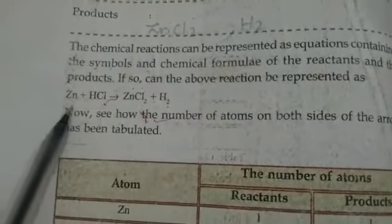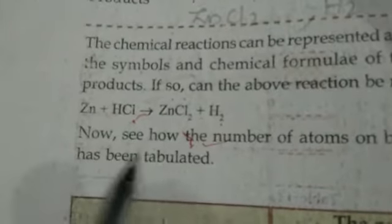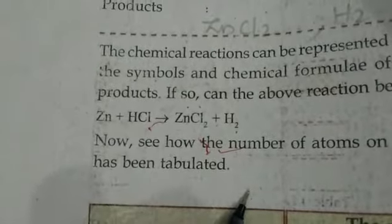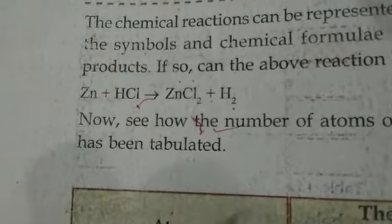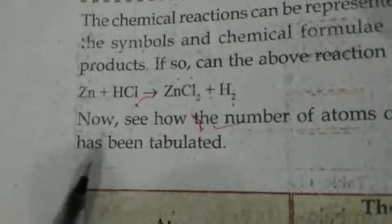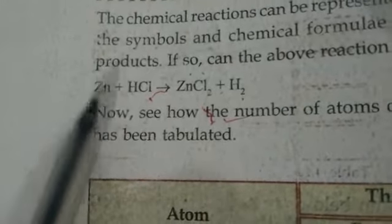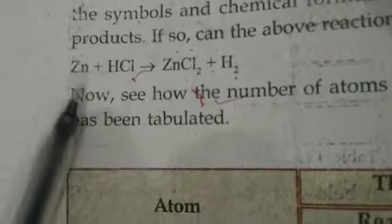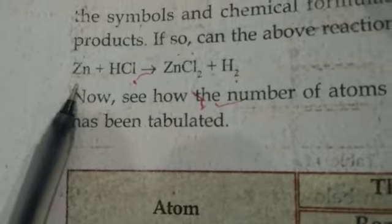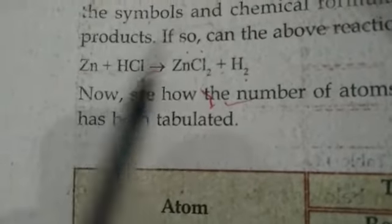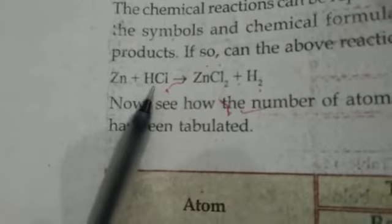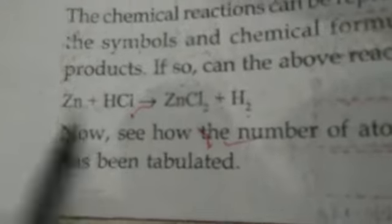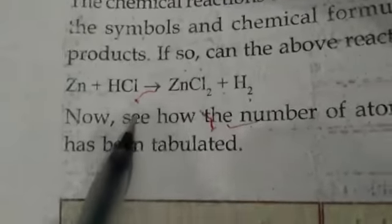See this equation: Sn + HCl gives SnCl₂ + H₂. This is a chemical equation but it is not a balanced chemical equation. Here there is 1 Sn on each side, but H is 1 on the left and H₂ on the right, and Cl is 1 on the left but Cl₂ on the right. So this is not a balanced equation.